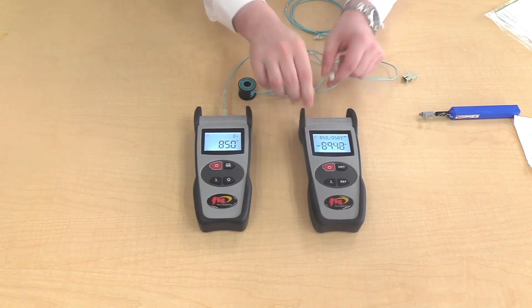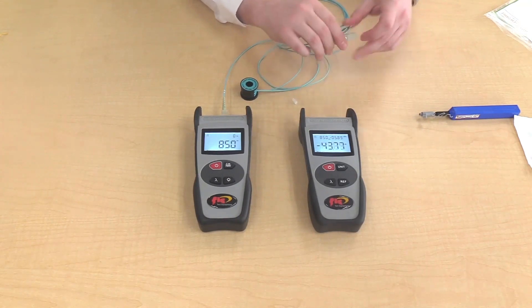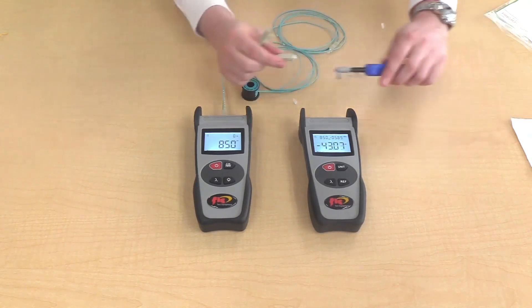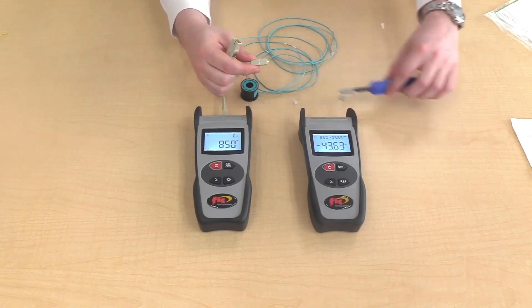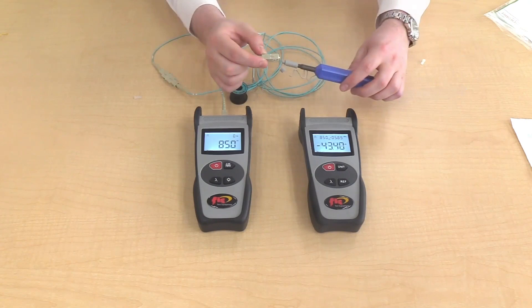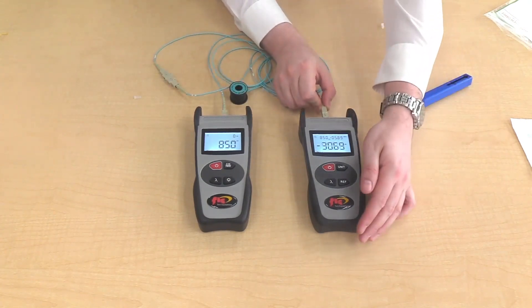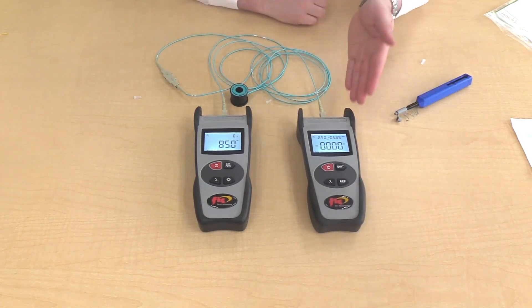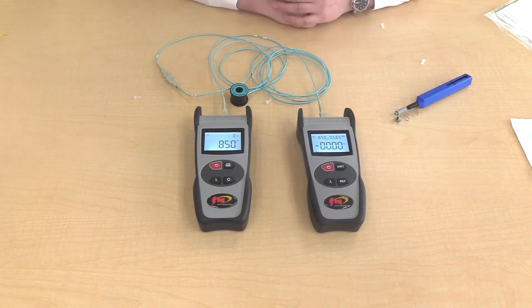Remove the reference cord from the power meter and attach it to the adapter. Clean the connector on the patch cord. Insert it into the adapter. Then clean the other connector and plug into the power meter. The reading on the power meter will give the loss on the connector.